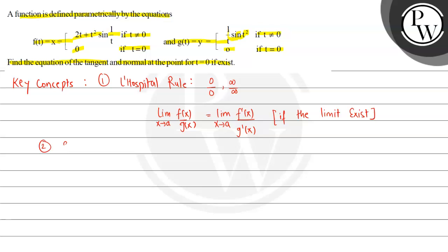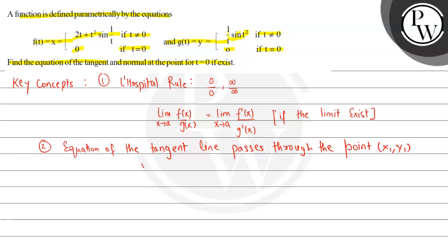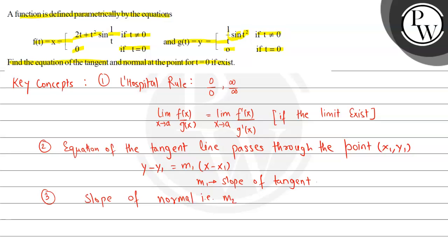The second concept is the equation of the tangent line passing through the point (x₁, y₁): y − y₁ = m₁(x − x₁), where m₁ is the slope of the tangent. The third concept is the slope of the normal m₂, where m₁ · m₂ = −1.